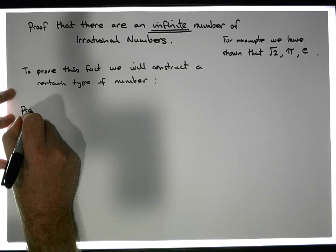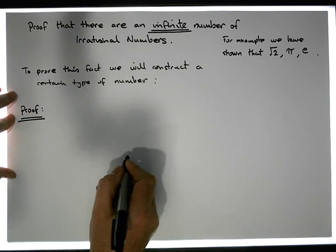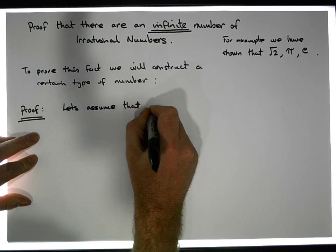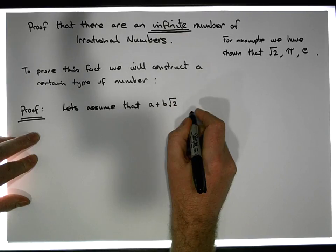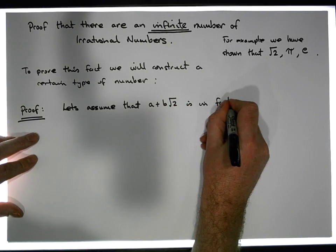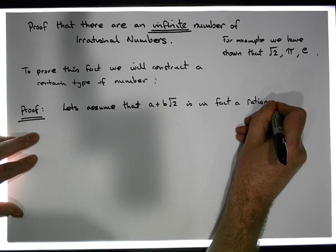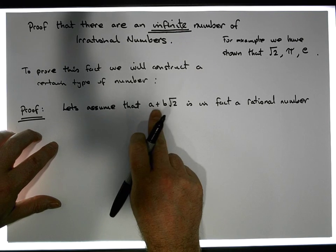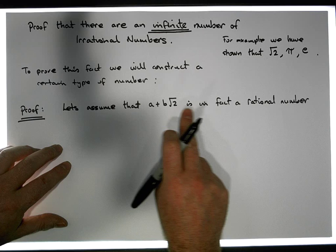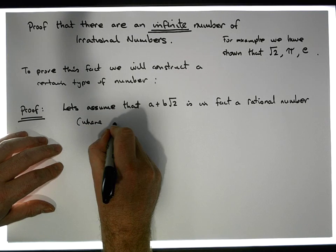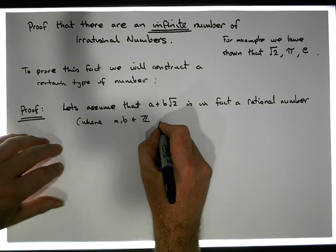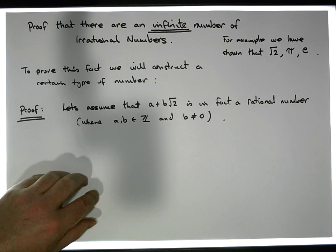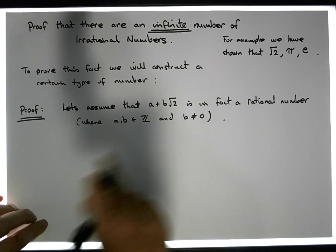So here's our proof. What I'm going to do is assume that a plus b root 2 is in fact a rational number, where a and b are elements of the integers. And more importantly, I'm going to assume that b is not equal to 0 — b is not equal to 0, but can be any other integer value.